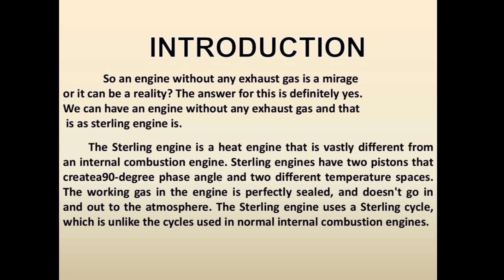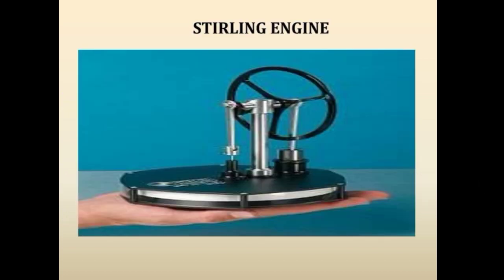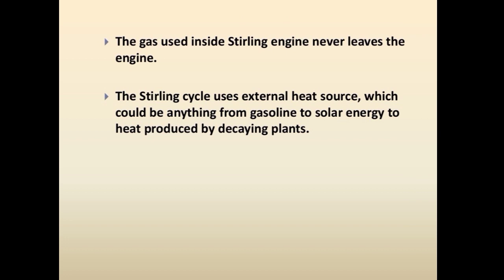We can have an engine without any exhaust gas, and that is the Stirling engine. The Stirling engine is a heat engine that is vastly different from an internal combustion engine. Stirling engines have two pistons that create a 90-degree phase angle and two different temperature spaces. The working gas in the engine is perfectly sealed and doesn't go in and out to the atmosphere. The Stirling engine uses a Stirling cycle, which is unlike the cycles used in normal internal combustion engines. The gas used inside the Stirling engine never leaves the engine. The Stirling cycle uses an external heat source, which could be anything from gasoline to solar energy to heat produced by decaying plants.